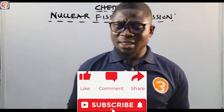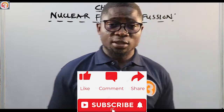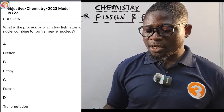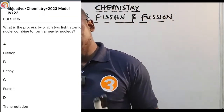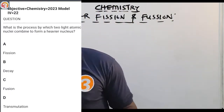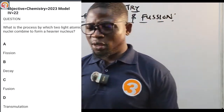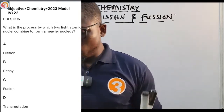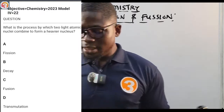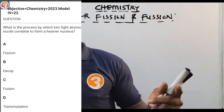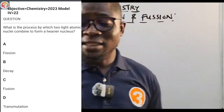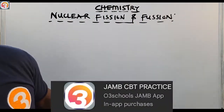Let us see a question from the app — this is a 2023 question number 22. They ask: what is the process by which two light atomic nuclei combine to form a heavier nucleus? Options are: A — fission, B — decay, C — fusion, D — transmutation. I want to come back to this and other questions on this application after we are done with the class.